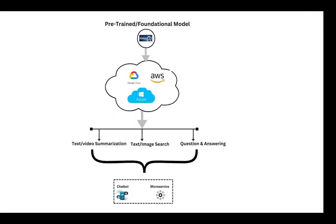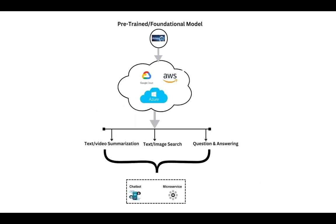Once you've determined the set of tasks that you want your LLM to perform, the next step is deploying and making it accessible. You can do this either as a chatbot using tools like Streamlit, which are quite popular, or as a microservice using Flask or Django. The choice of how to run inference on the LLM and make it available to the end user — or even integrate it with downstream applications — entirely depends on your specific requirements and use cases.